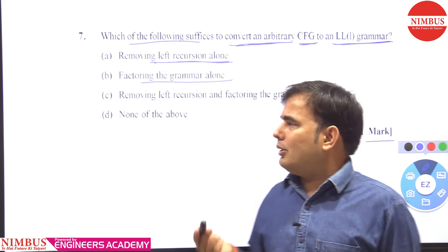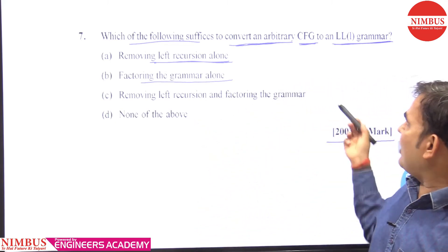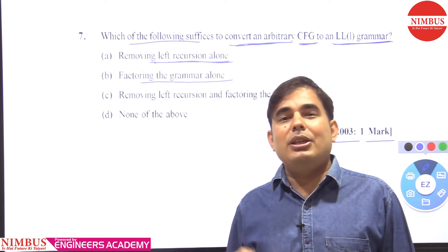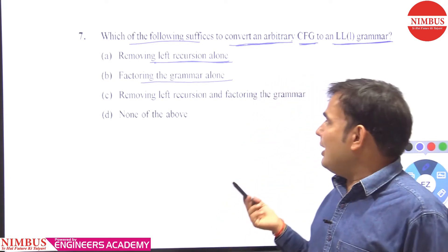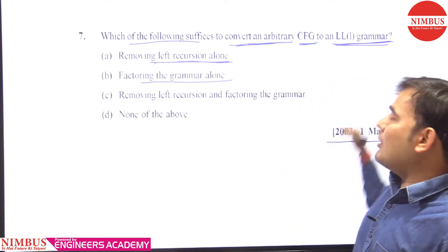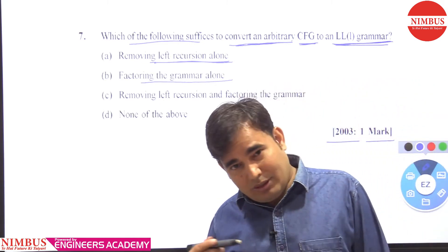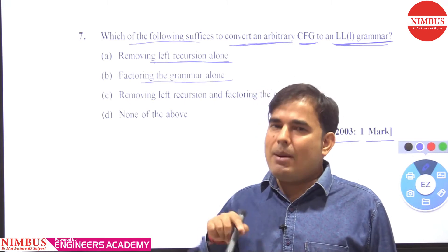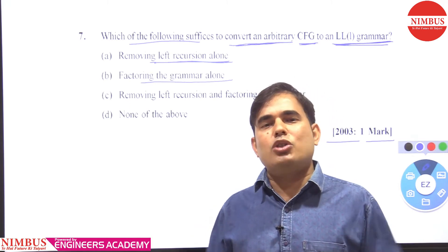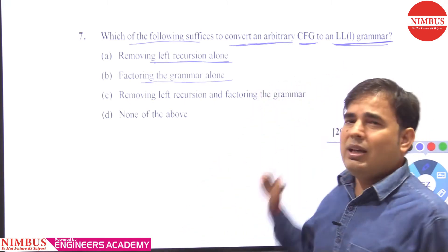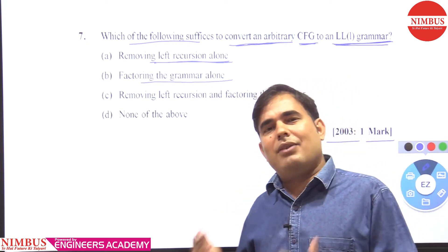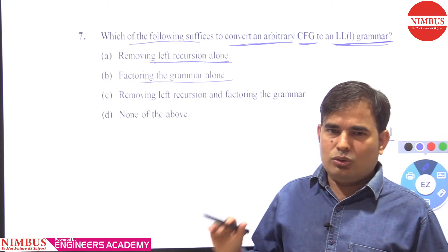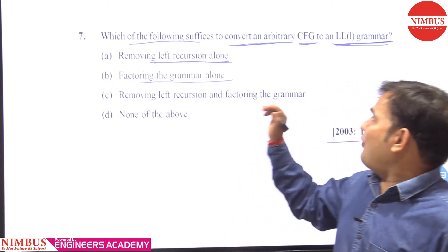When you remove left recursion and left factoring from the context-free grammar, you still cannot give the guarantee that the grammar is LL(1). Because the given grammar can be ambiguous, and if a grammar is ambiguous, it does not belong to any type of deterministic grammar — not LL(1), not LR(0), not LR(1), not SLR(1), not LALR(1), not CLR(1).